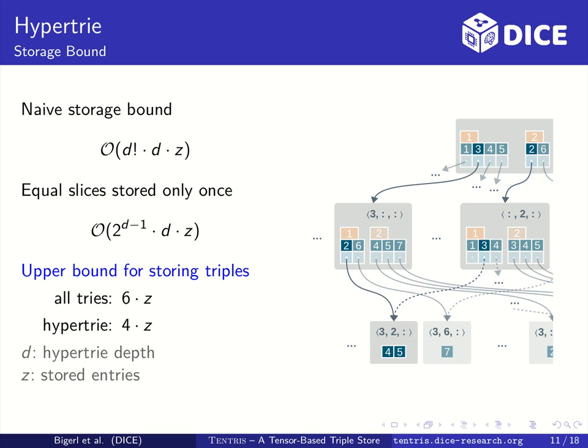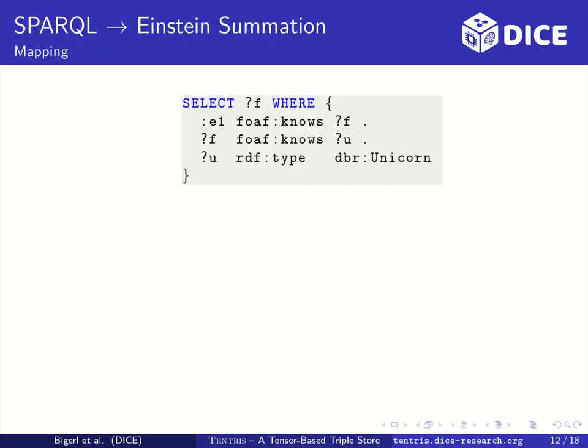Next we'll have a look at how SPARQL queries are processed. The shown example SPARQL query returns all friends of Entity 1 who are unicorns. In the first step the triple patterns are resolved. For that the terms from each triple pattern are used as slice keys whereas the positions of the variables are left unbound in the slice keys.